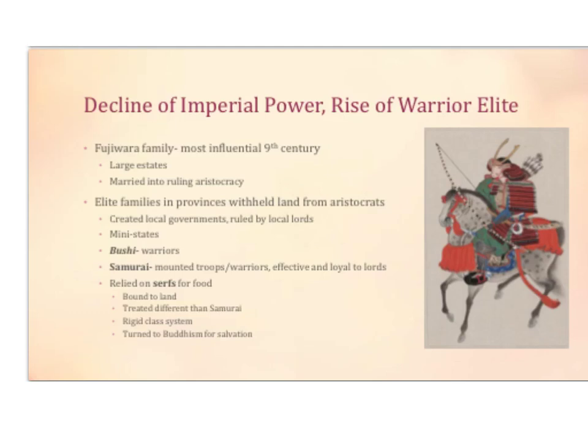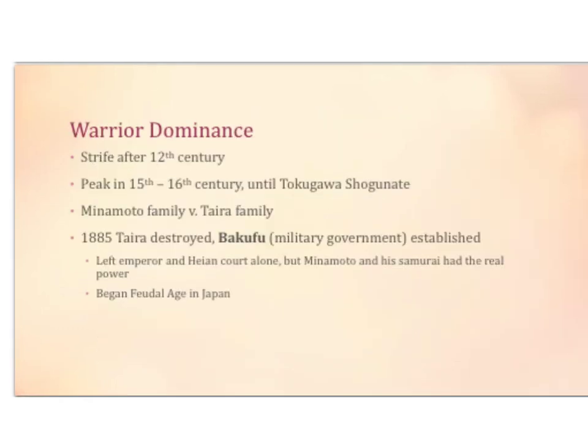The serfs returned to Buddhism. The upper class looked at Zen Buddhism, while the lower class focused on the Buddhism associated with salvation. There is a lot of strife after the 12th century, peaking in the 15th to 16th century until the Tokugawa Shogunate. There are issues between the Minamoto family and the Taira family. In 1185, the Minamoto family destroys the Taira family and sets up a bakufu, a military government. They leave the emperor in Heian alone, but the Minamoto family and the samurai have the real power. This begins the feudal age in Japan.